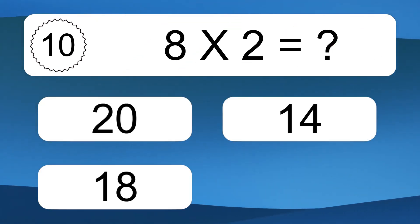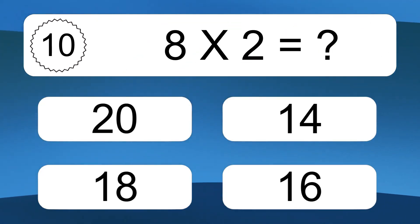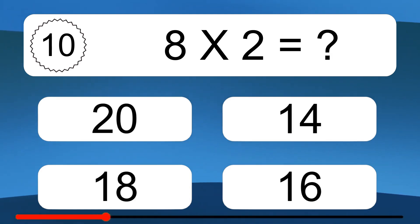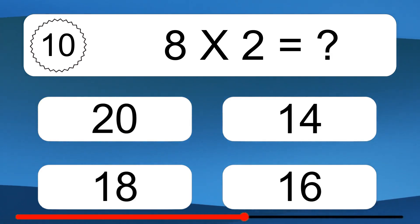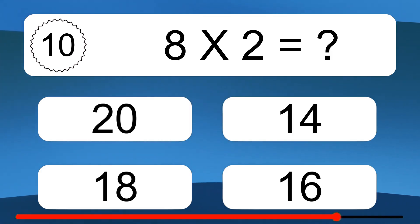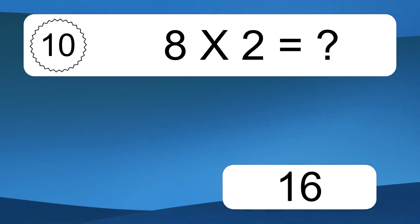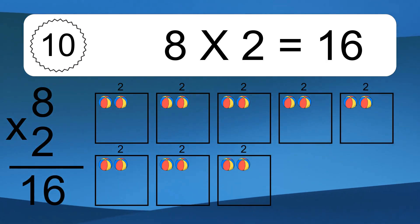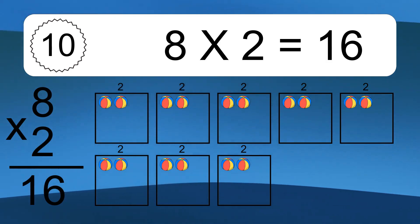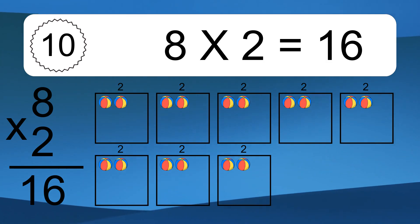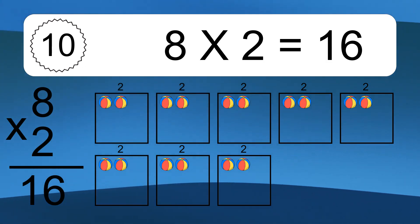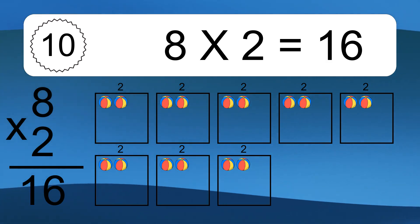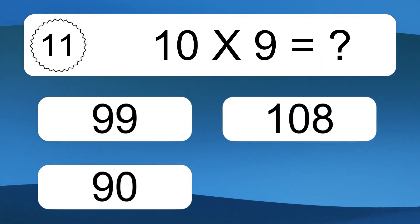8 times 2 equals what? 8 times 2 equals 16. We have 8 boxes, and each box has 2 colorful balls inside. If you count all the balls in all the boxes together, you will have 8 times 2 balls. This equals 16 balls.